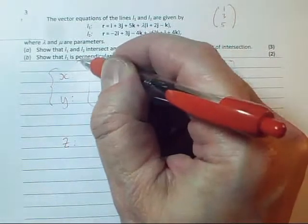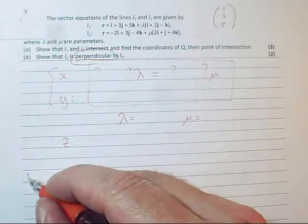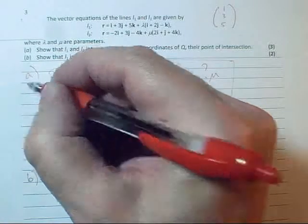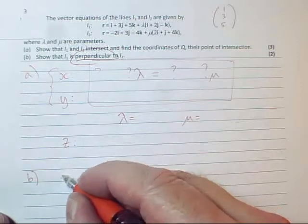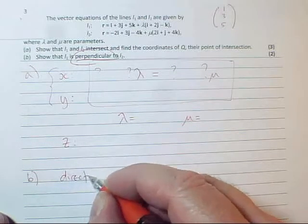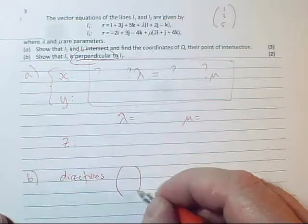And then we've got to show that L1 is perpendicular. So perpendicular is a fact about the directions of the line. So angle between the lines or whether the lines are perpendicular. What we're interested in is the directions. So part of the equation of each line tells you the direction.